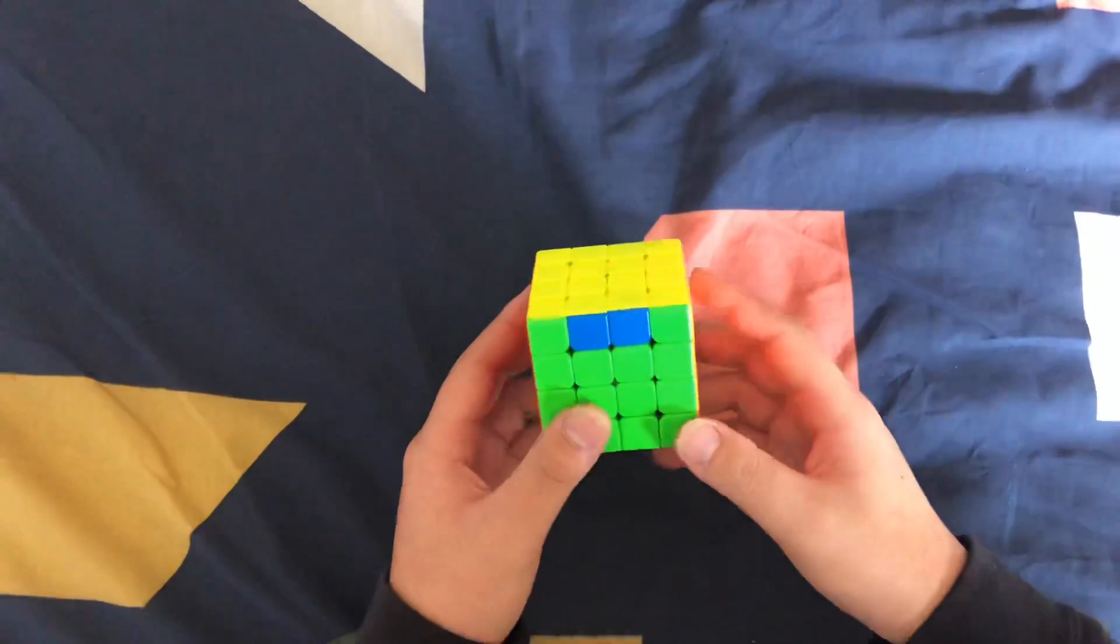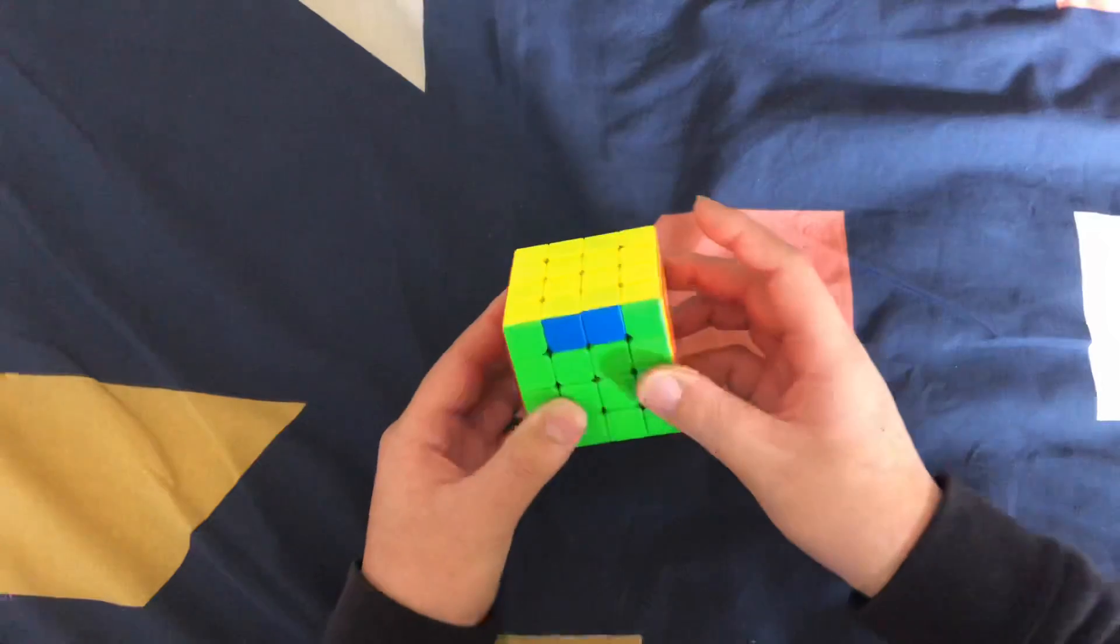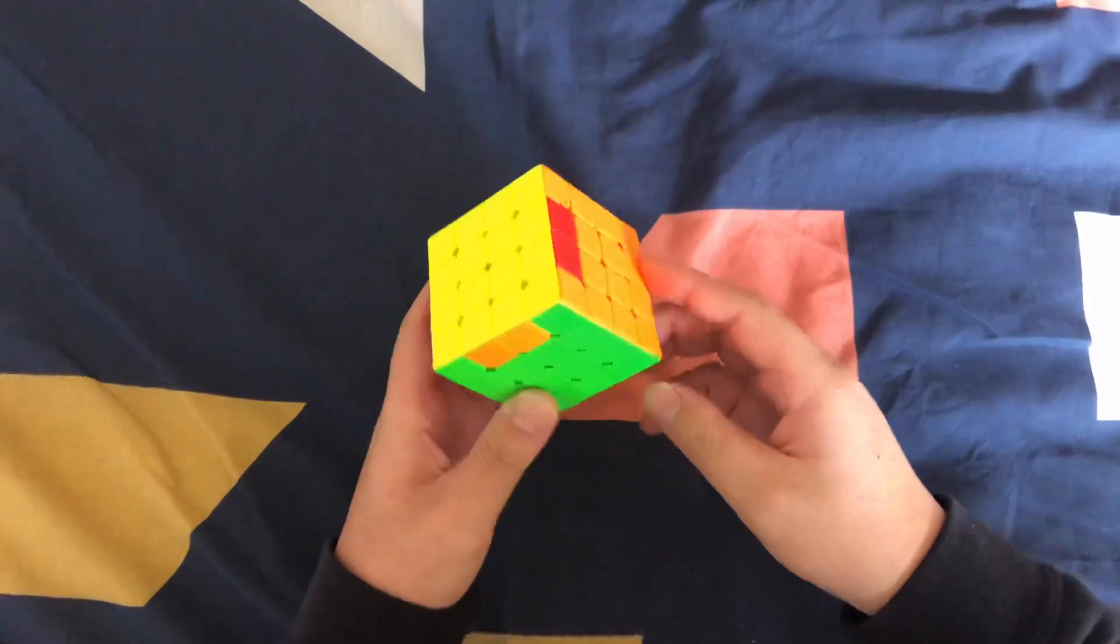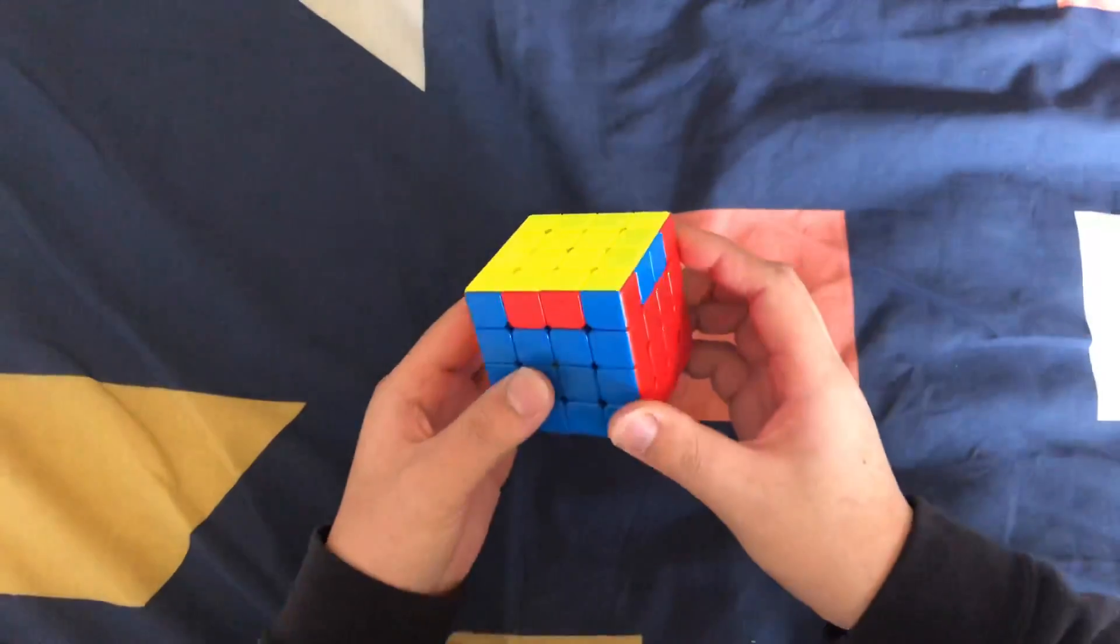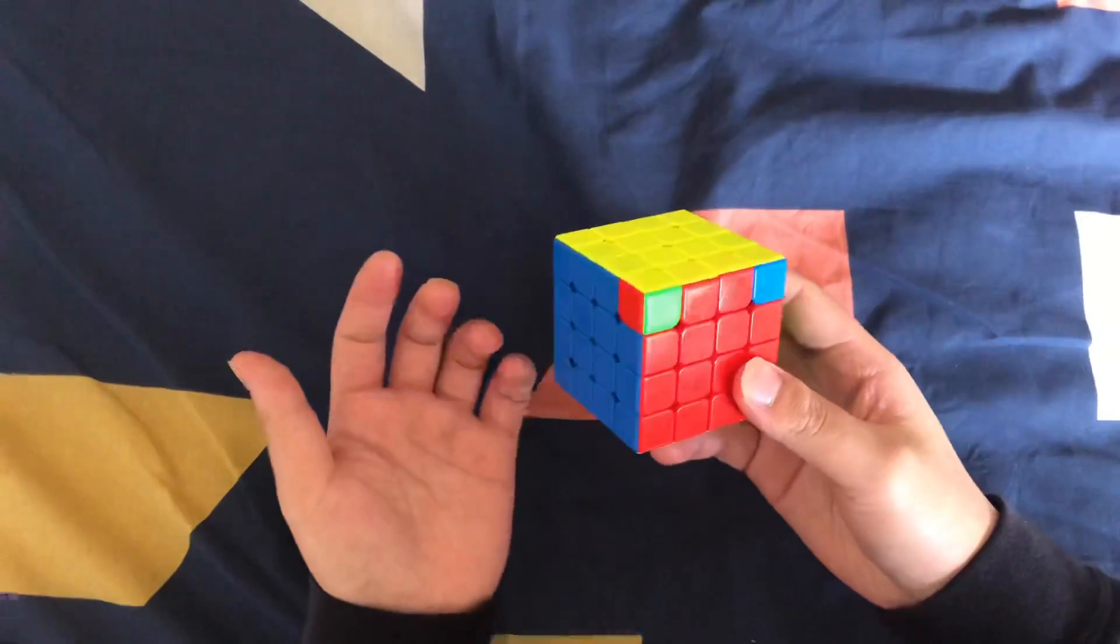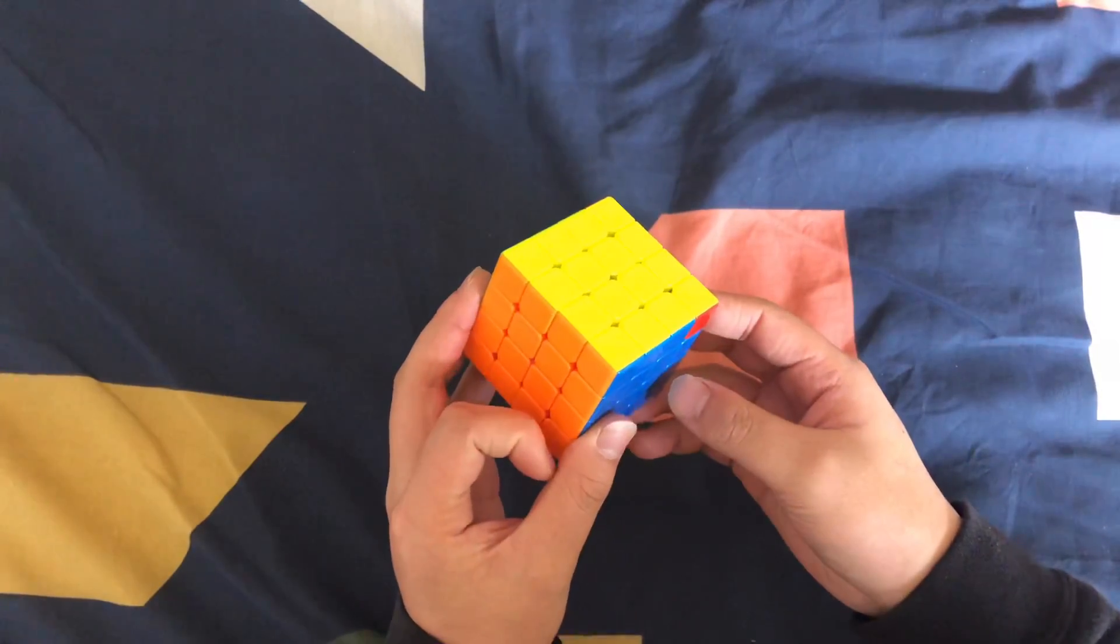So PLL parity can either look like this, this, this, or this. So basically cases you would not find on a 3x3 on PLL stage.